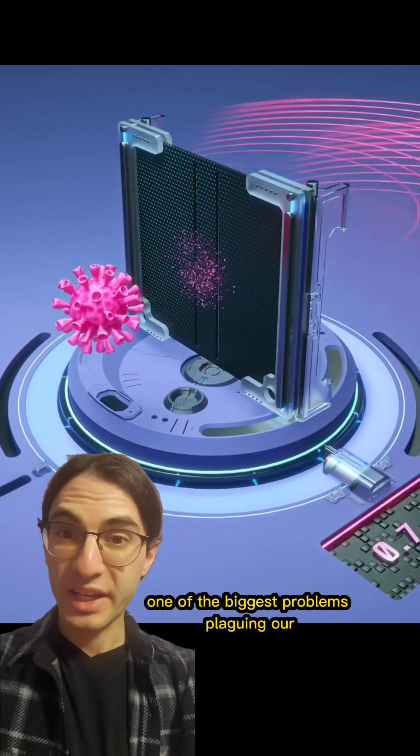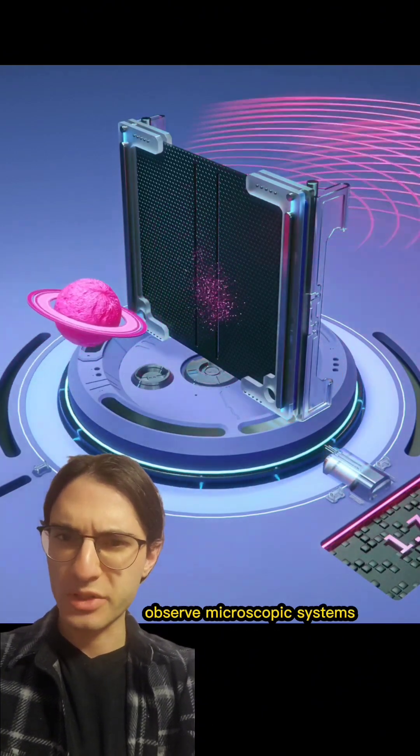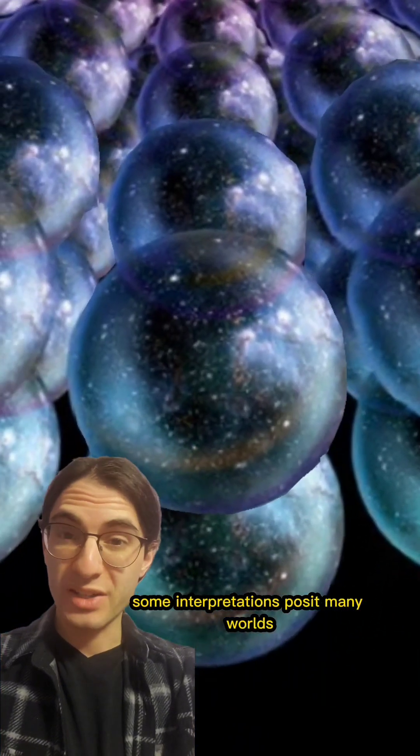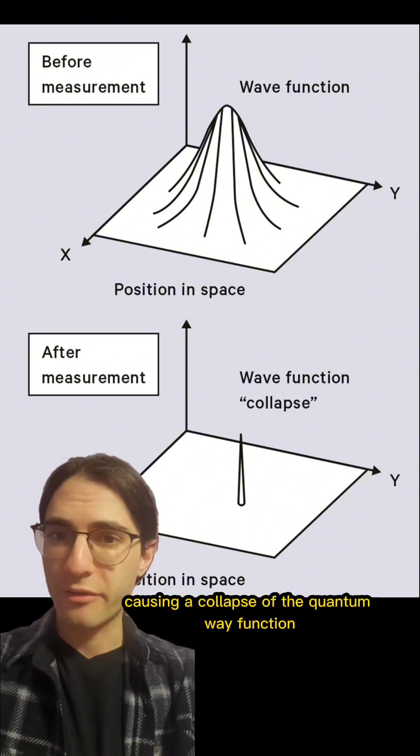One of the biggest problems plaguing our understanding of the quantum world is how to understand what happens when we observe microscopic systems. Some interpretations posit many worlds, others promote observation to a special process, causing a collapse of the quantum wave function.